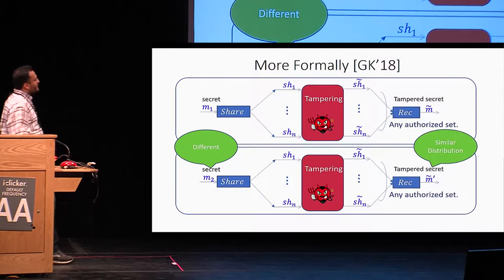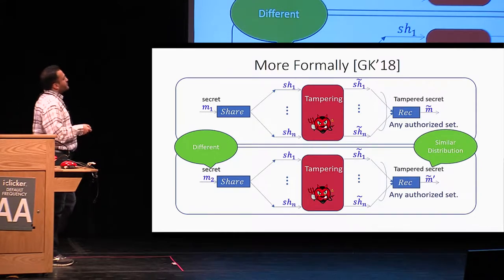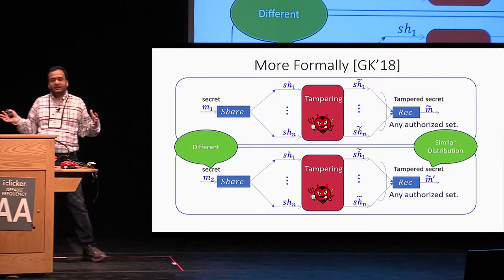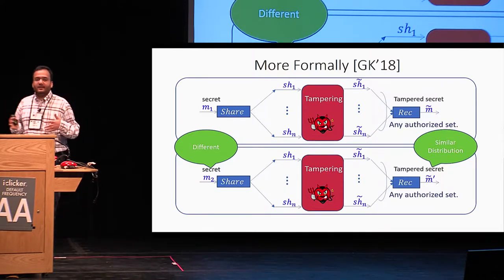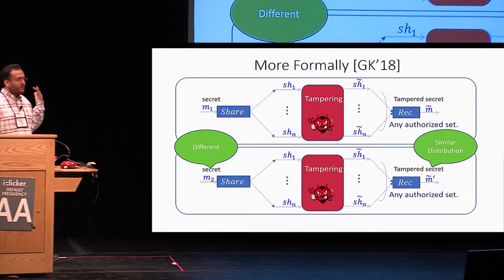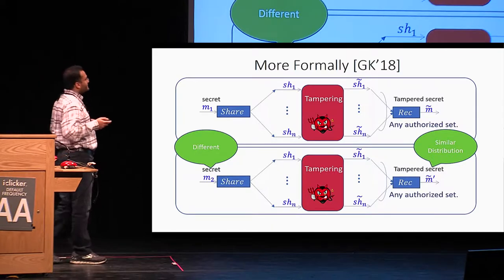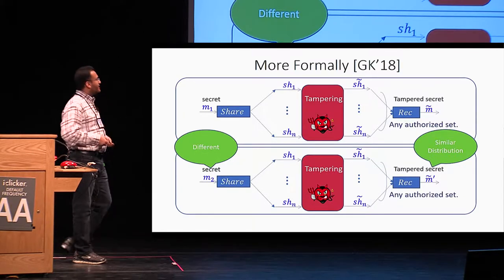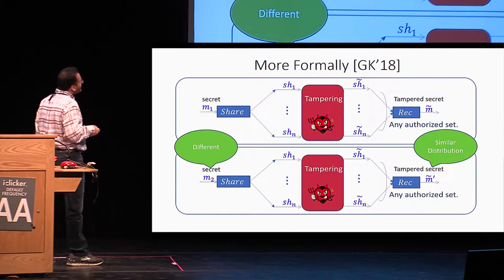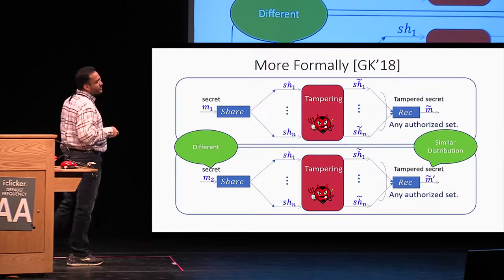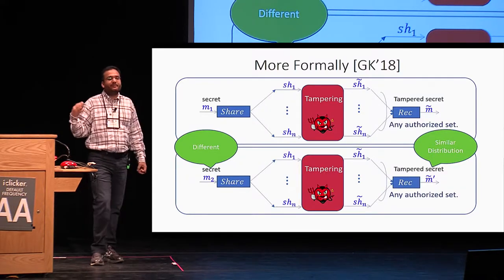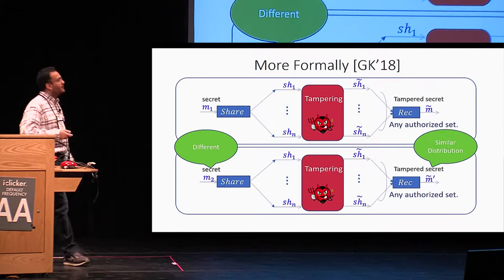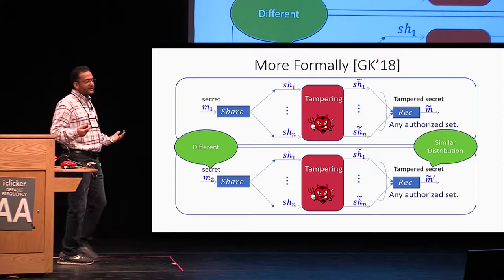We require that the distributions of m-tilde and m-tilde prime should be statistically or perfectly close. Essentially, this means that regardless of whether you started with m1 or m2, you ended up with the same tampered message — which means the tampered message is actually independent of the message you started with.